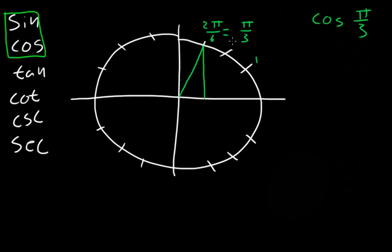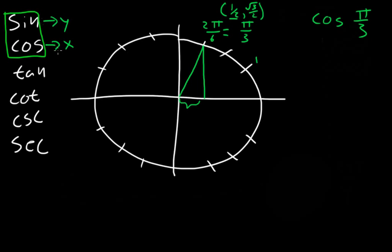The cosine of π/3 is now the x value of the coordinate here, which is 1/2. So cosine of π/3 is just 1/2. Cosine always correlates to the x value, and sine always correlates to the y value. The x value here is 1/2, so the cosine of π/3 is 1/2 — and that's your answer.